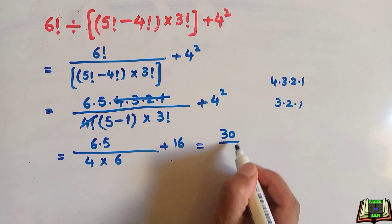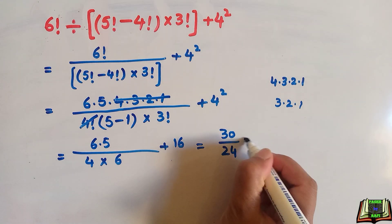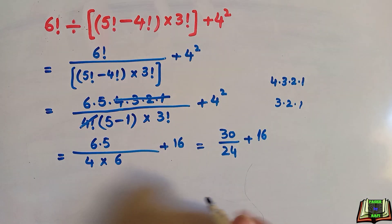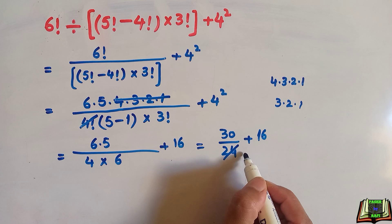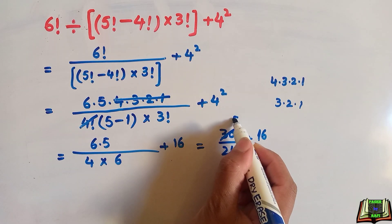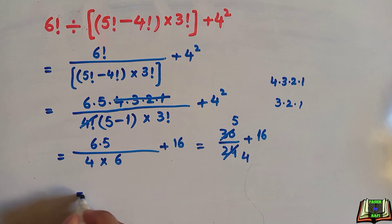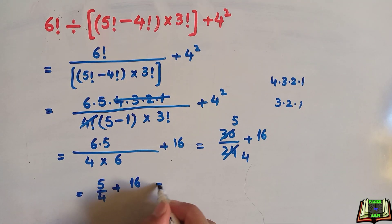Now multiplying, 6 times 5 is 30 and 4 times 6 is 24, plus 16. So we have 30 over 24, which simplifies to 5 over 4, plus 16.